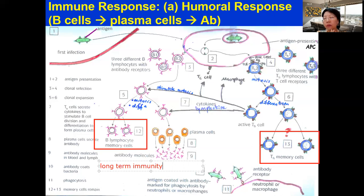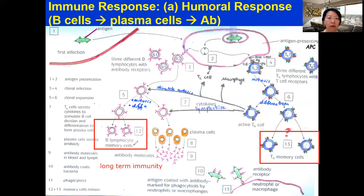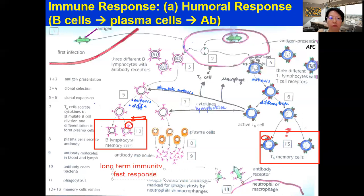Long-term means when you are infected by that particular pathogen, your body will remember it. Your body in the first round totally removes the pathogen, but memory cells are left in your body so that subsequently, next time when you encounter the same type of pathogen, your immune system can remember that pathogen. Because memory cells have receptors specific to the pathogen, the moment they encounter the pathogen's antigen, they will respond very quickly - a faster response.